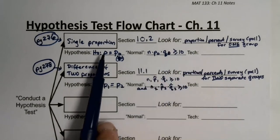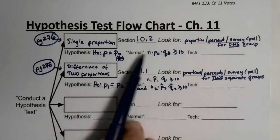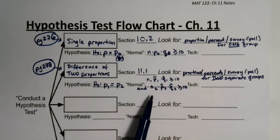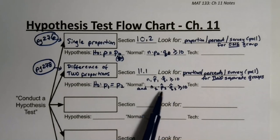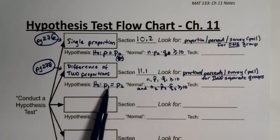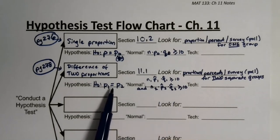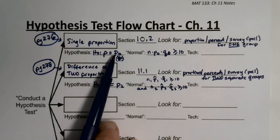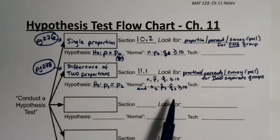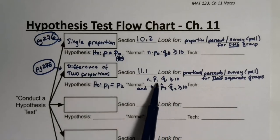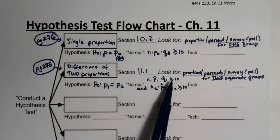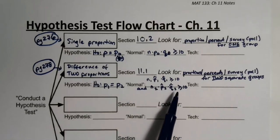The single proportion normality check uses P-naught because that's the null hypothesis value. The two-proportion test doesn't have null hypothesis values — everything is letters — so that's why you use P1-hat, P2-hat, Q1-hat, and Q2-hat instead.